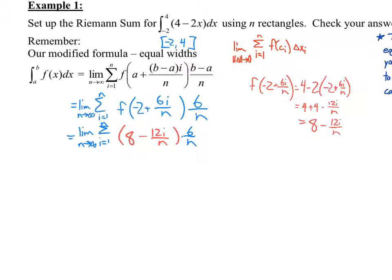Now, like Harrison asked earlier, can we just take the 6 over n out right now? Sure. Could we distribute it now? Sure. Which should you do? Whichever one you want. It doesn't matter. I'll go ahead and just distribute it. So, limit as n approaches infinity of the sum i equals 1 to n of 48 over n minus 72i over n squared. So, now, notice we're taking the sum of both of these.